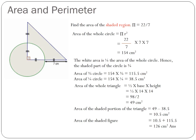Area of the shaded portion of the triangle is equal to the area of the whole triangle minus that one quarter circle. So it is equal to 49 minus 38.5, which is equal to 10.5 square centimeters.